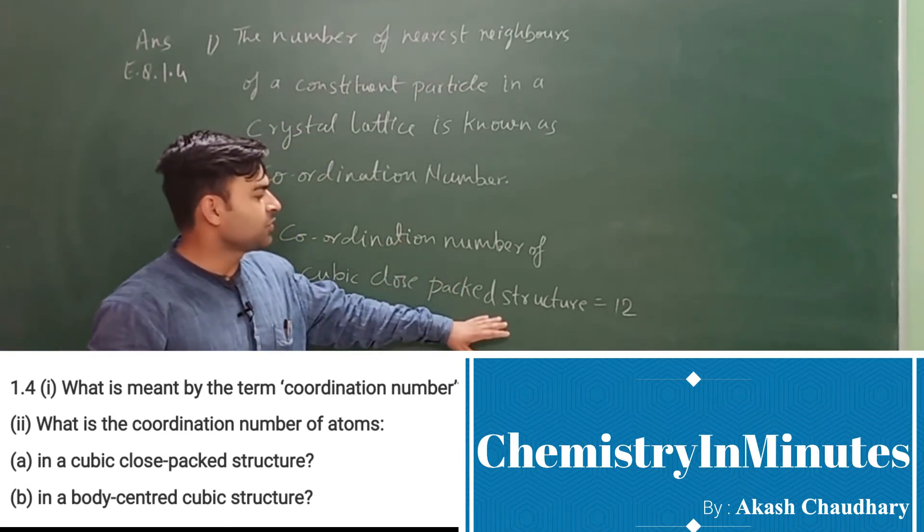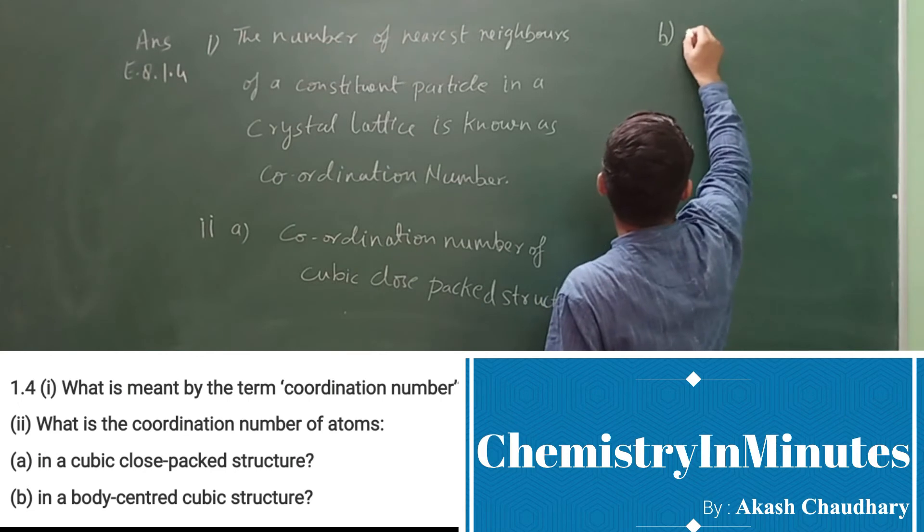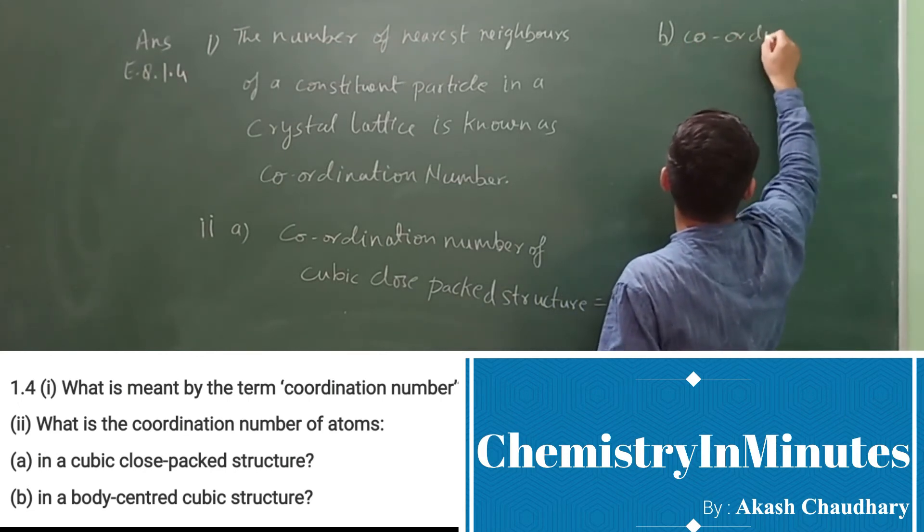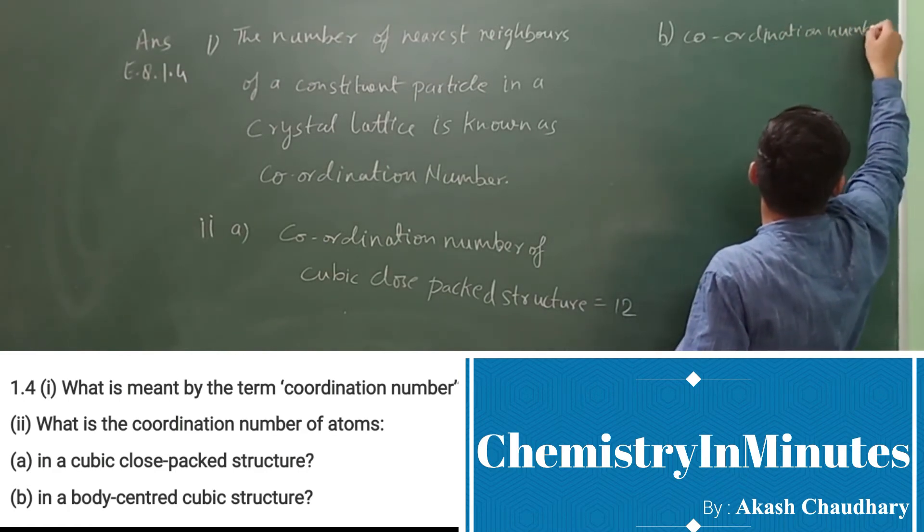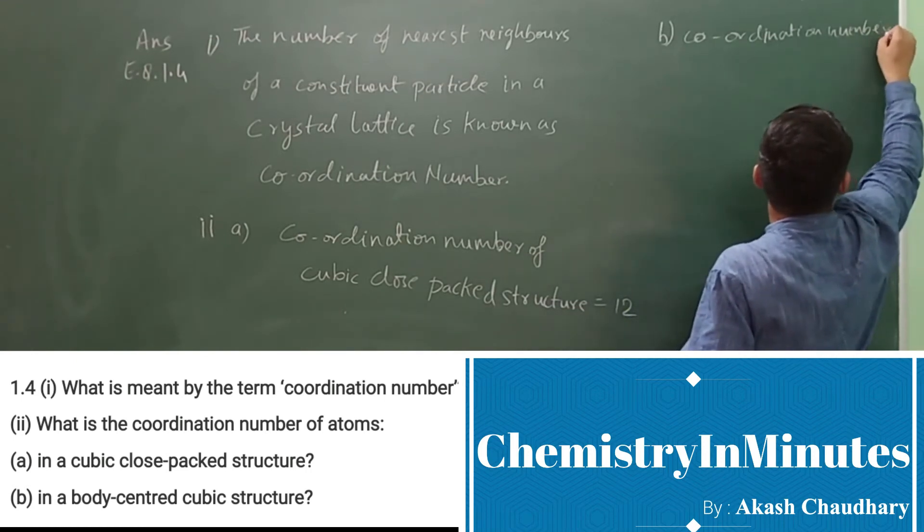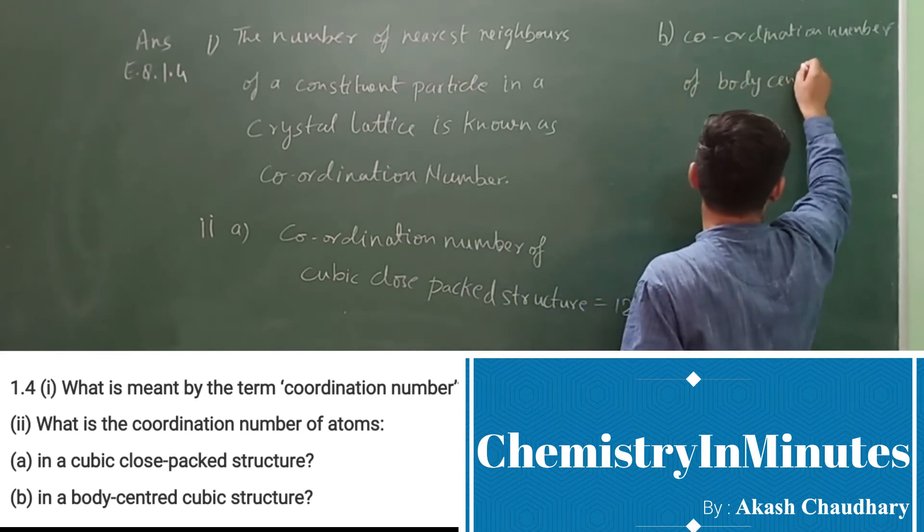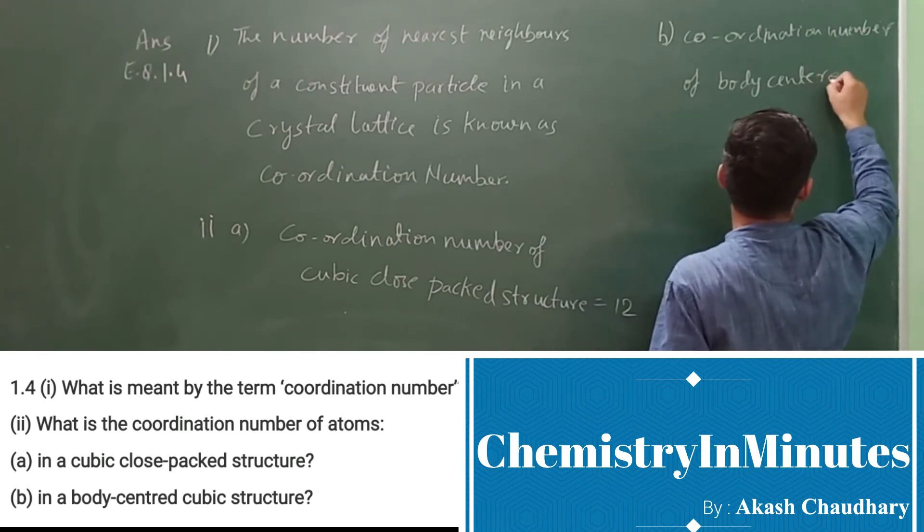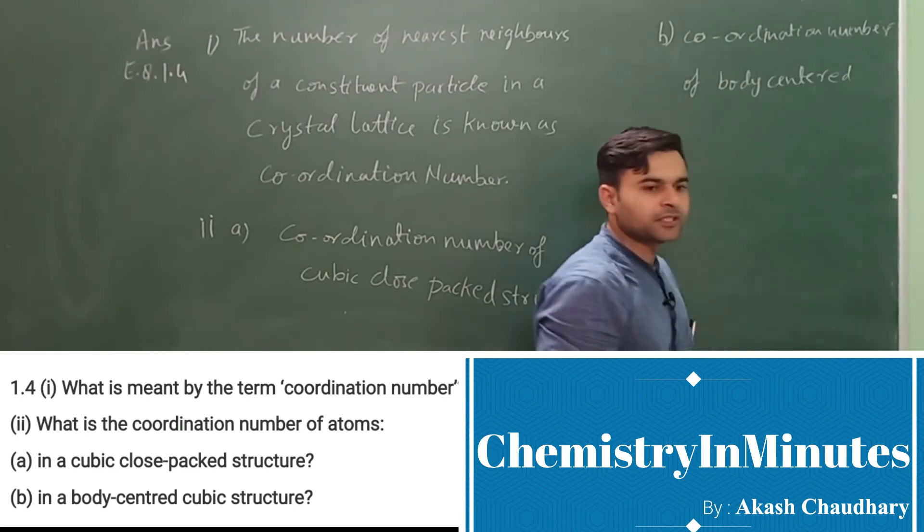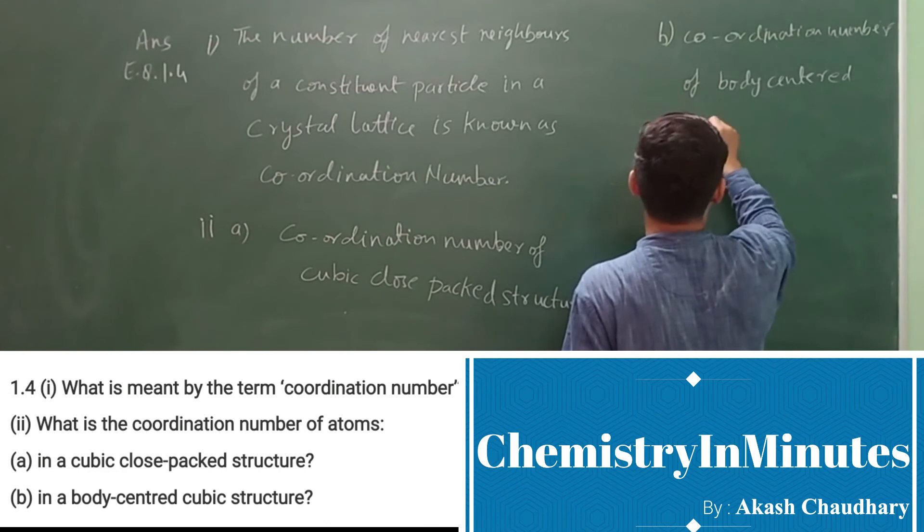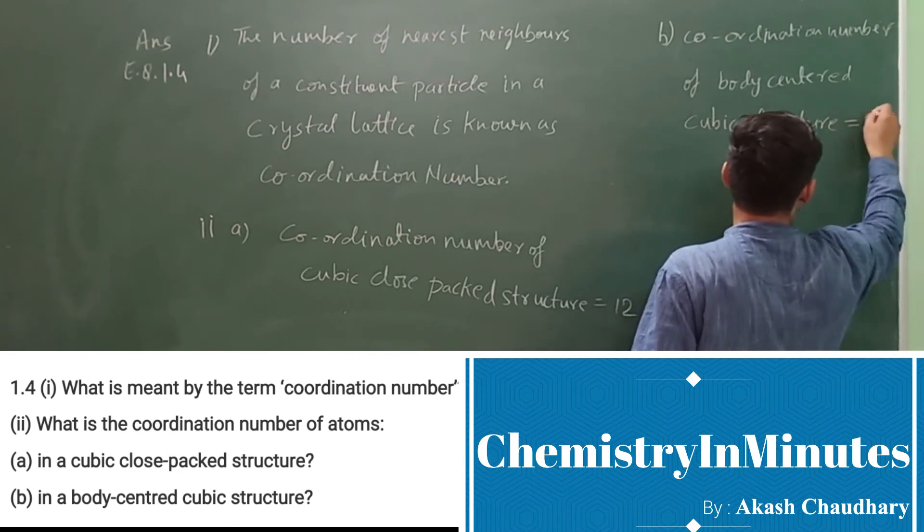So coordination number of cubic close-packed structure is 12. Then part B: coordination number of body-centered cubic structure equals 8.